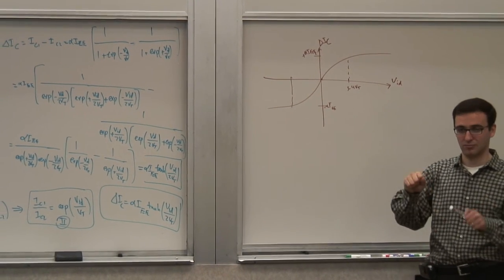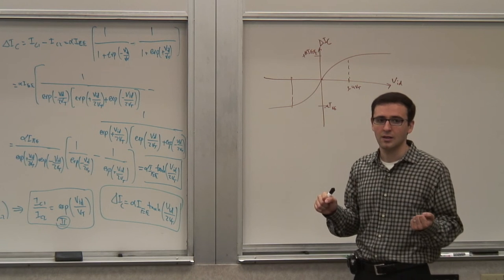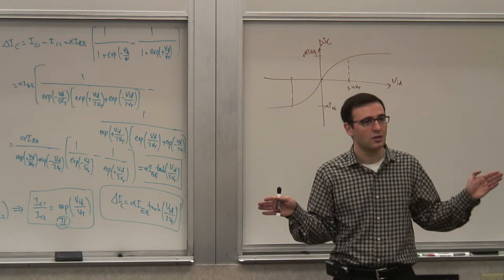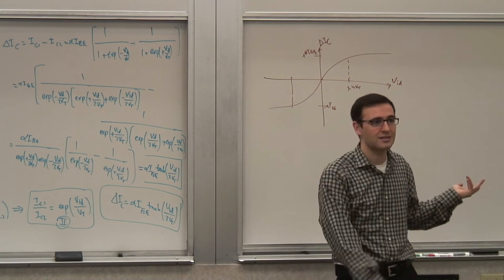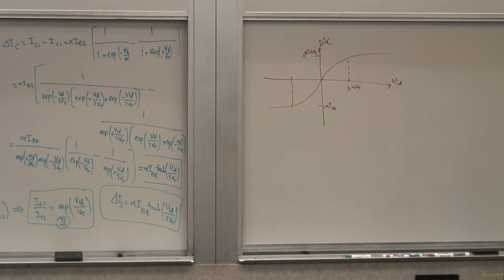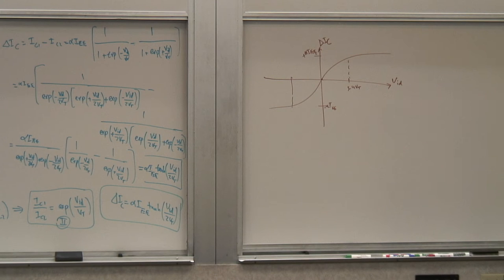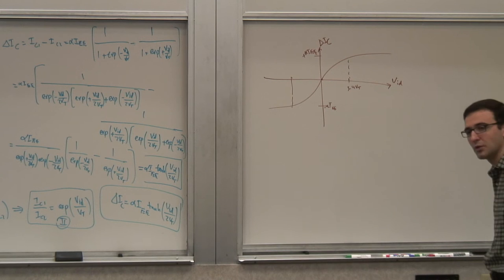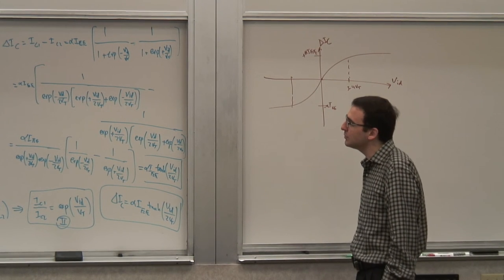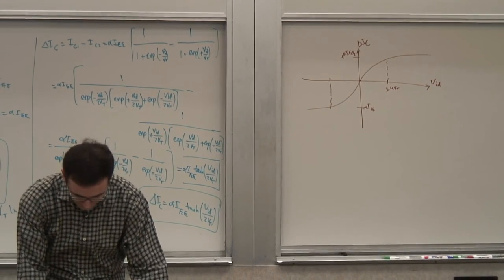That may be a good thing or a bad thing depending on what you're trying to do. If you want a lot of gain and fast current steering, it's good. If you want to maintain the form of a signal over a large voltage range, it's not good, because once you exceed this region the differential operation disappears. If I want to extend this linear range — if the transfer function is too steep — I need to reduce my gain.